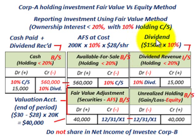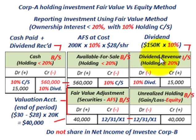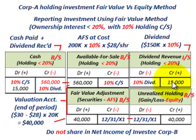The next thing we have to deal with is the dividend declared and received. The total dividend Corp B declared and paid was $150,000. Corp A has a 10% ownership in Corp B, so they're going to get 10% of the $150,000, which is $15,000. This would be dividend revenue recognized on the income statement. We debit cash for $15,000 and credit dividend revenue for $15,000.